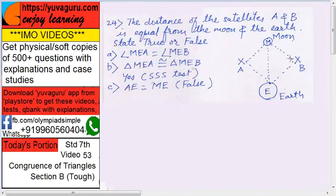Firstly, very important, see this. These two triangles sides are concurrent. ME, MB, AE, EB, and ME, ME. So these two triangles are congruent by what? SSS test.